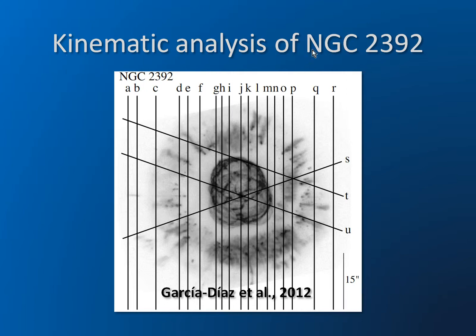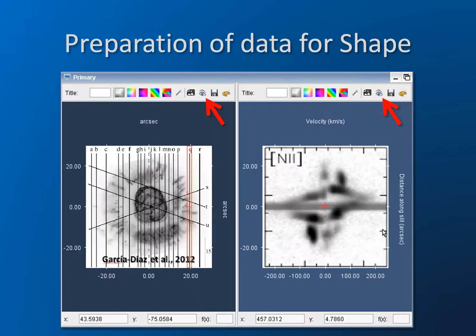Let's have a look at the kinematic analysis of the Eskimo Nebula. Here is an HST image with lines on top of it, which represent the slit positions obtained by Garcia Diaz et al. The data can then be prepared to incorporate into Shape. Here the image has been incorporated into the image rendering, and similarly the position-velocity diagram. It is convenient to prepare your images and PV diagrams in such a way that they fit most easily into Shape, using the observed image button and tool for that.